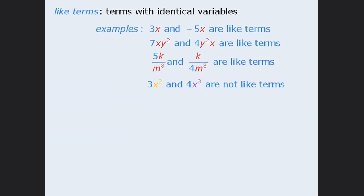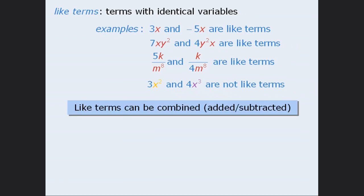The important point about like terms is that we can combine them through addition or subtraction. This should make sense to us — if the variables are identical then they must have the same value, and as such we should be able to combine them.